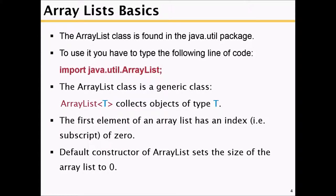The ArrayList class is found in the java.util package. To use it, type: import java.util.ArrayList. The ArrayList class is a generic class, meaning ArrayList<T> collects objects of type T. T could be a String or any other class type.